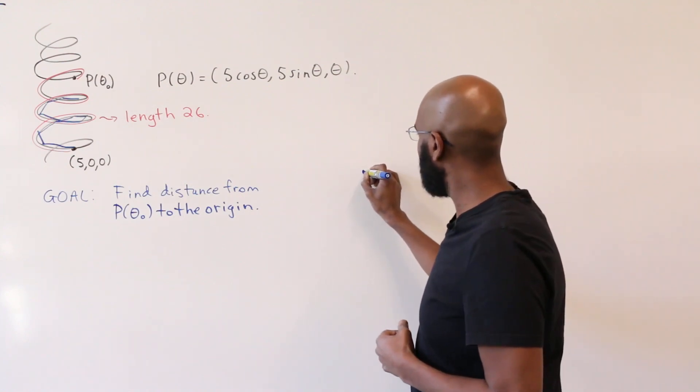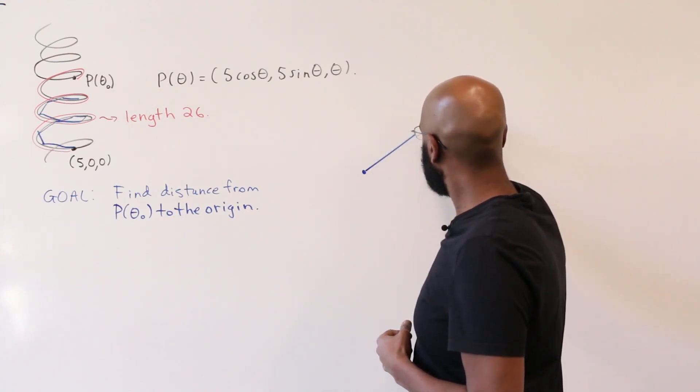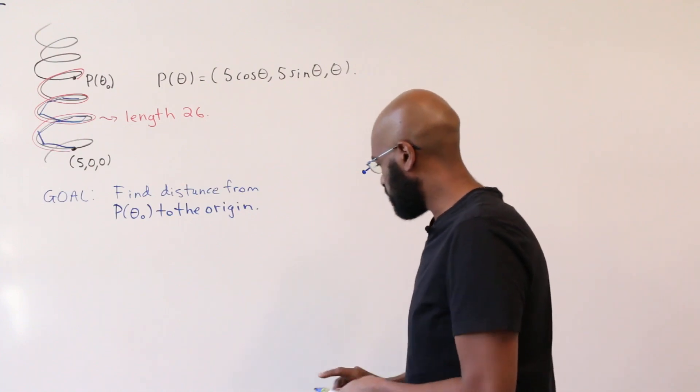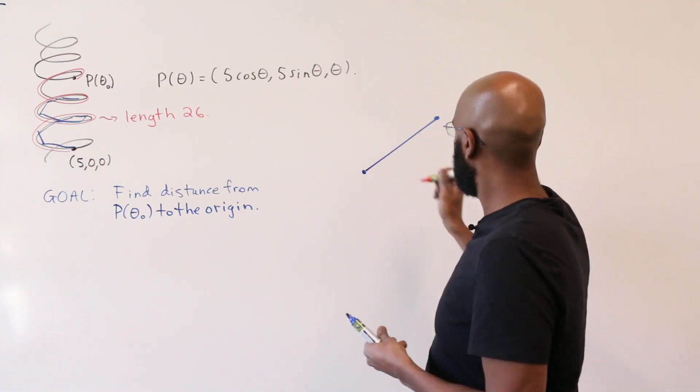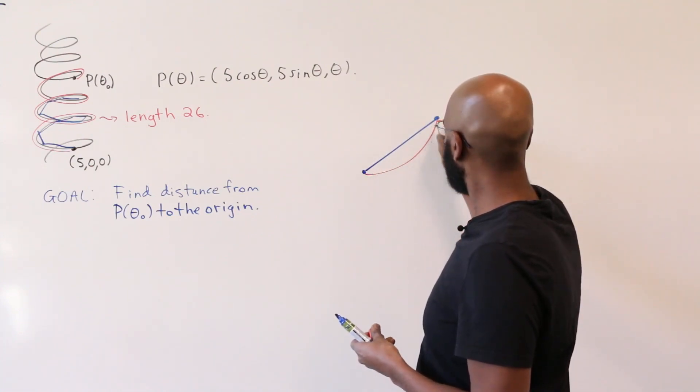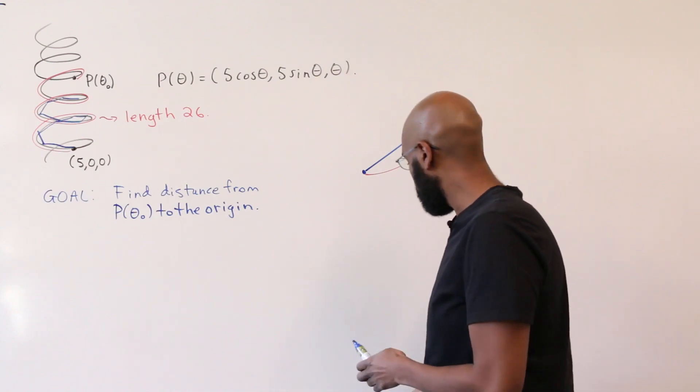Okay, so let's imagine we have one of these pieces, this line segment approximating our red curve. What does this distance look like?